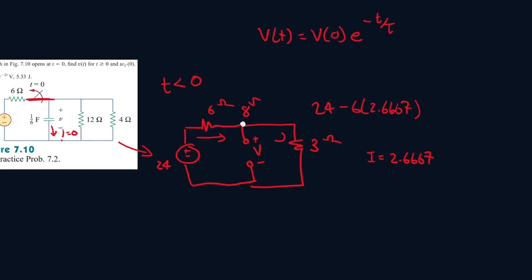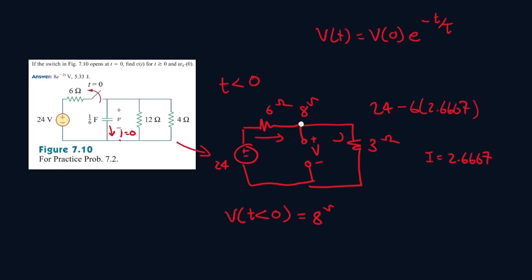So it's 8 volts at this region. So when time is less than zero for v, it's going to be 8 volts. Now, when time is equal to zero, that's when we open the switch, right? So what does this mean for v? Well, when time is equal to zero, v is still equal to 8 volts because the voltage can't change instantaneously across the capacitor. So when v is zero, it's equal to 8 volts. So that's this part done.